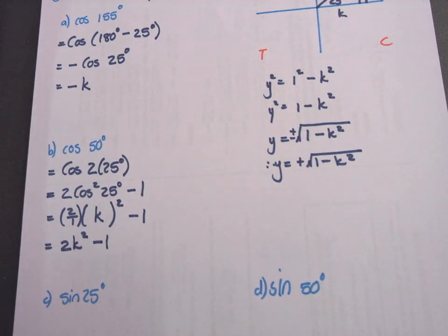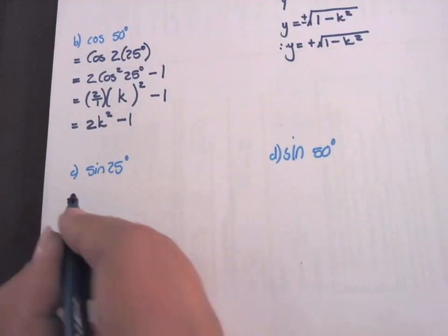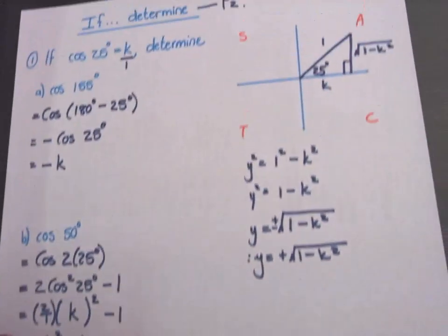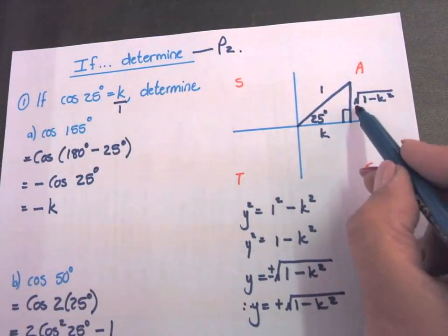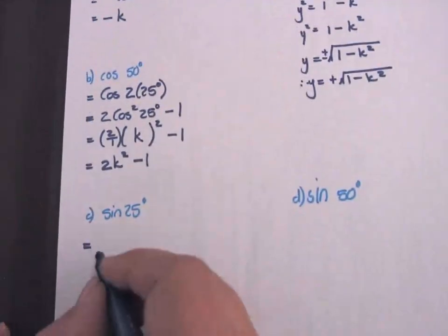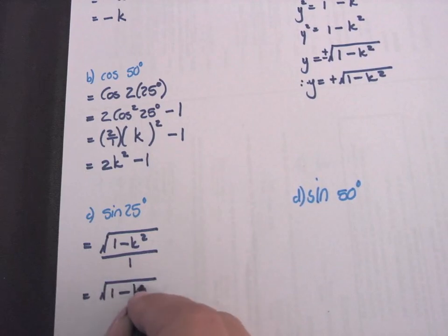Number C. Sine 25. I have to use my triangle now. Sine is opposite over hypotenuse. So it's the square root over 1, which will only be the square root 1 minus K squared. Just to be thorough: square root of 1 minus K squared over 1, which equals square root of 1 minus K squared.